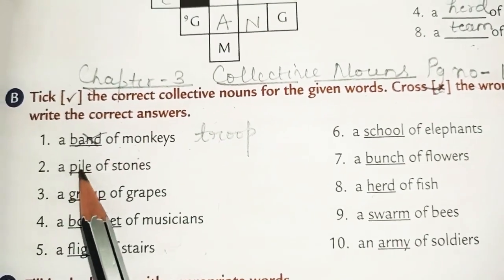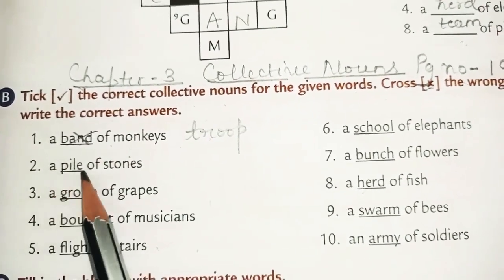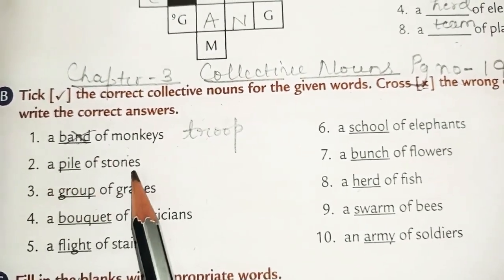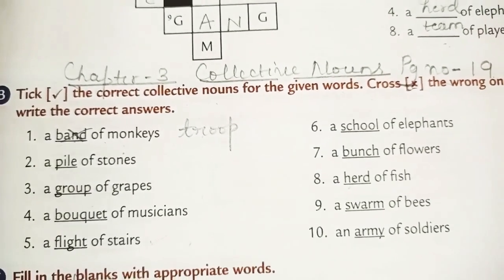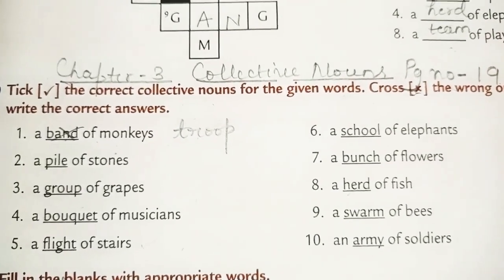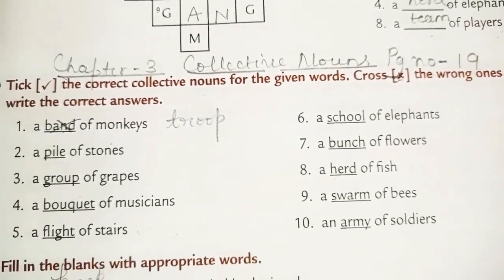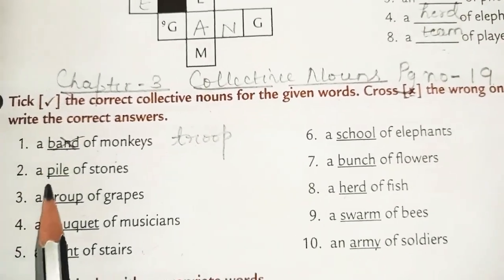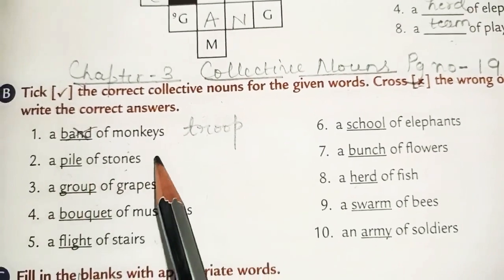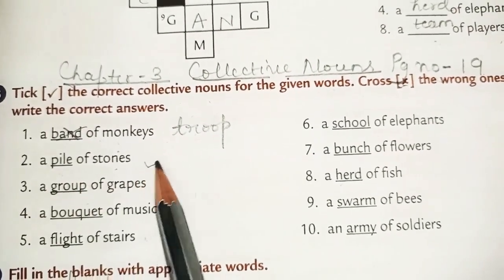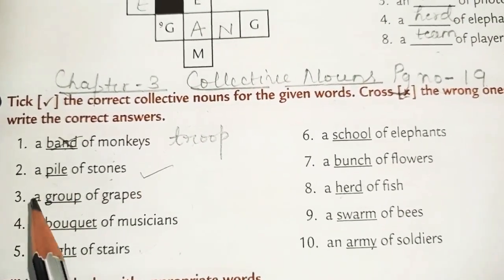Then we have the second one: a pile of stones. A pile of stones is correct. Pile is the correct collective noun here.